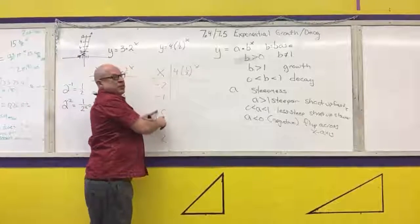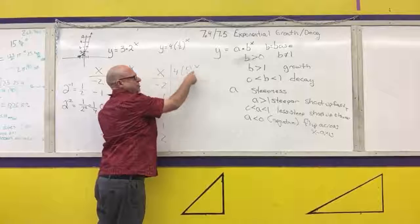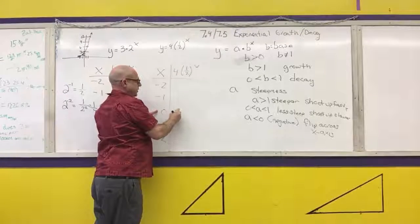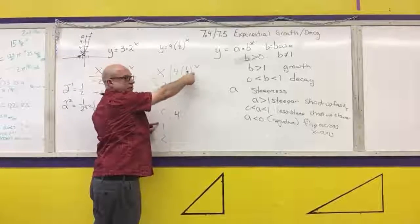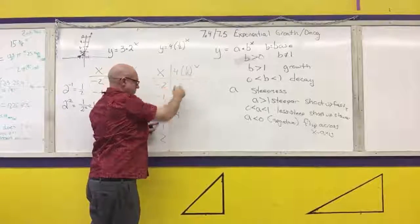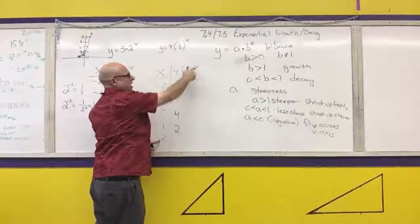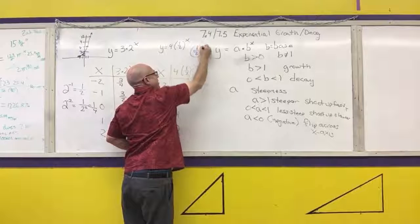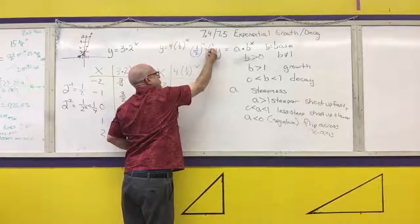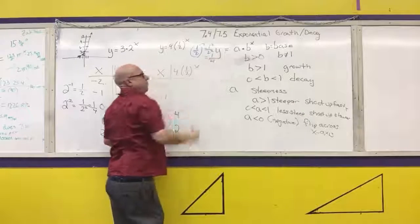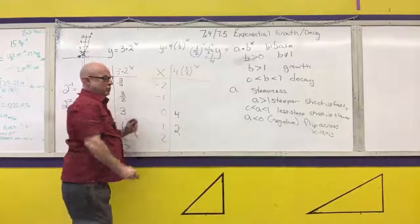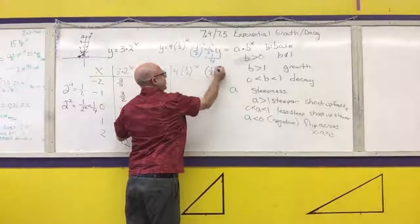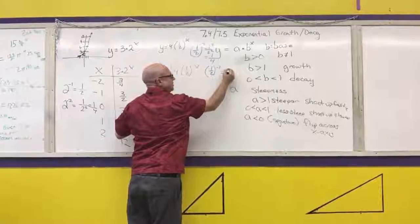Now let's look at the decay function. Put a 0 in — that's the easiest power. What's one-half to the 0? 1. Times 4 is 4. What's one-half to the 1? What's 4 divided by 2? 2. What is one-half squared? One-half squared equals 1 squared over 2 squared, which is one-fourth. What is 4 divided by 4? 1. What is one-half to the negative 1? Flip it over and change the sign to positive — that gives 2. And 2 times 4 is 8.